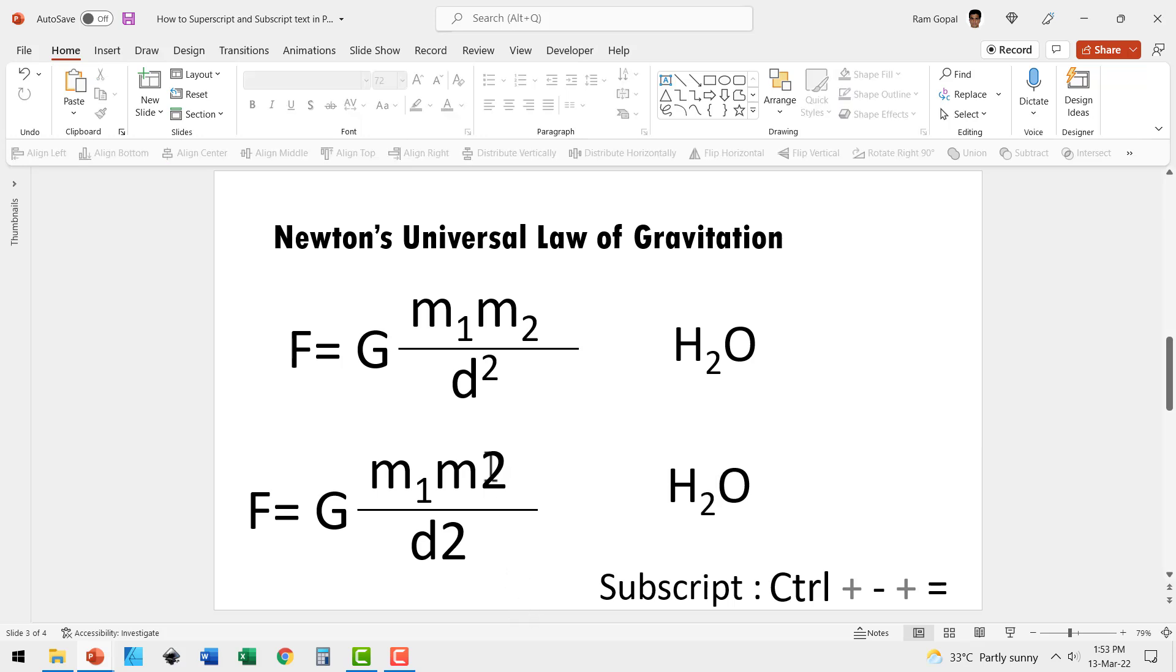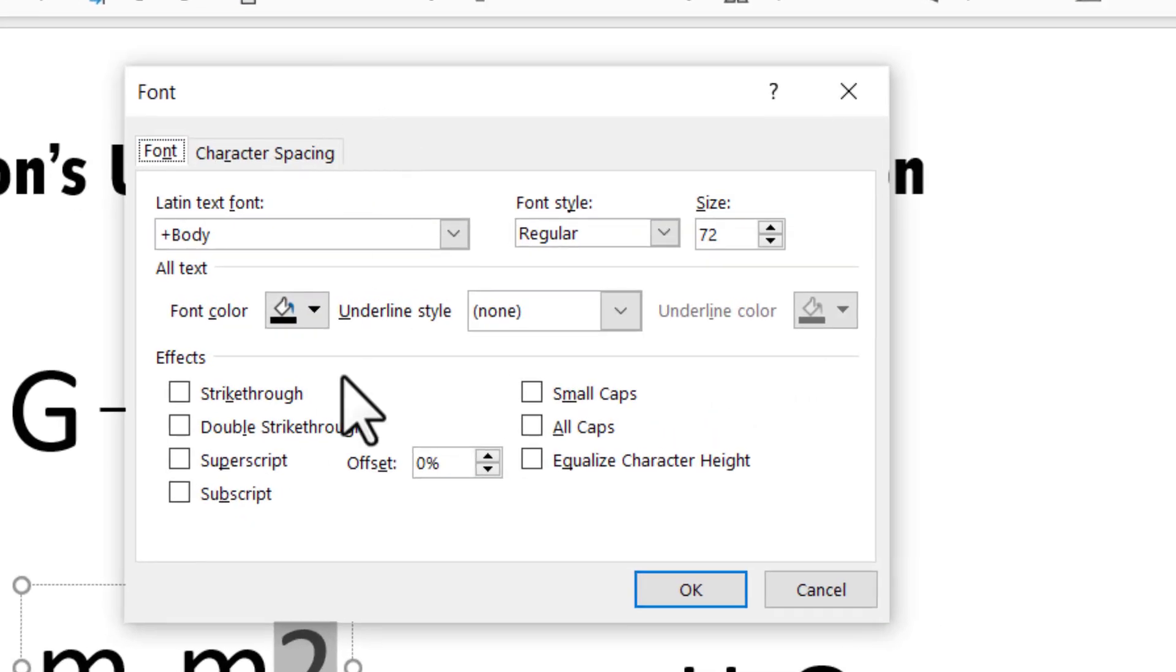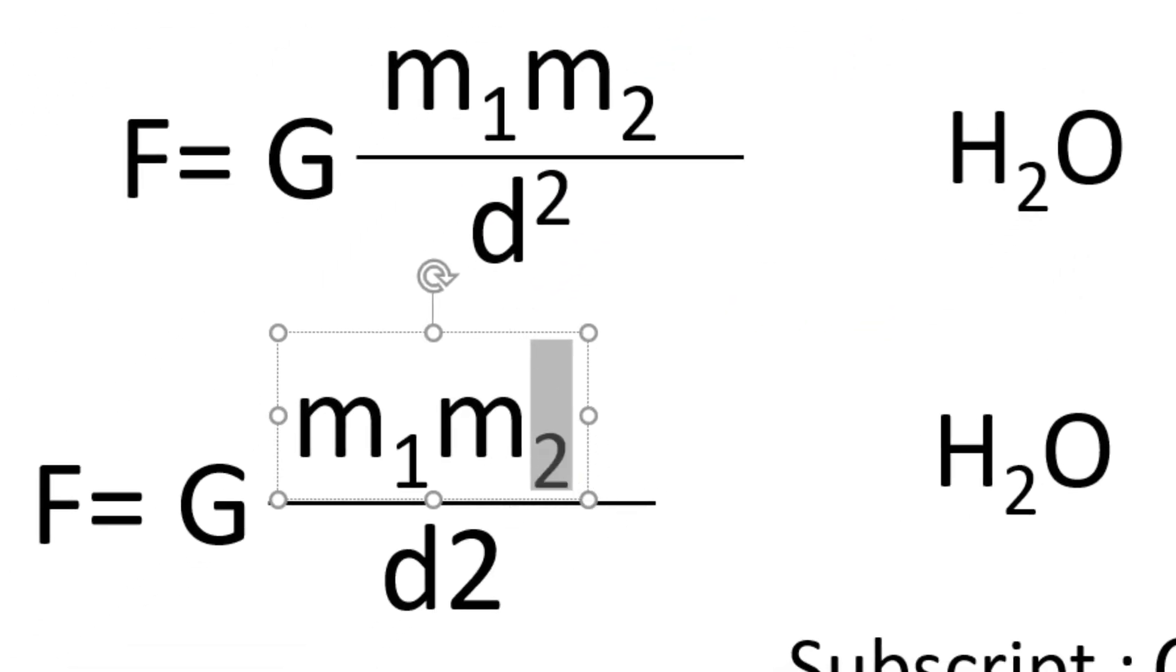You can also convert a character into a subscript by selecting the character, Home tab, Font group, expand the dialog box. And here we have the option for subscript and you say OK, now the conversion is made.